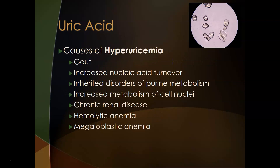Causes of hyperuricemia include gout, anything that increases nucleic acid turnover or cell turnover — such as increased metabolism of cell nuclei from injury and repair — inherited disorders of purine metabolism, chronic renal disease where the kidneys aren't filtering properly, and hemolytic and megaloblastic anemias, which cause higher red cell turnover.